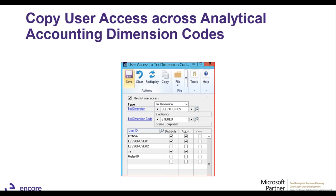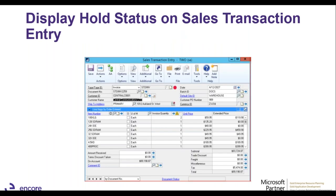For those using analytical accounting, they've added new features. Prior to GP 2018, there was no way to copy access to analytical dimension codes from one user to another. They've now created a copy-user function across analytical accounting dimension codes, which expedites granting new users access to the same dimension codes. Additionally, they've brought back the hold status visual indicator on the sales transaction — a red stop sign dot — so you can physically see if there's a hold against a document, preventing it from being printed or posted.